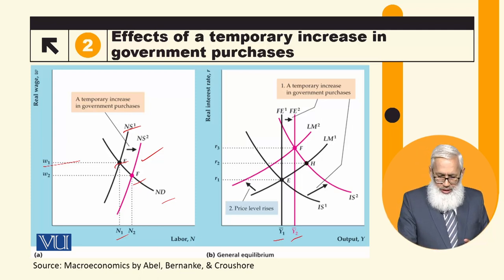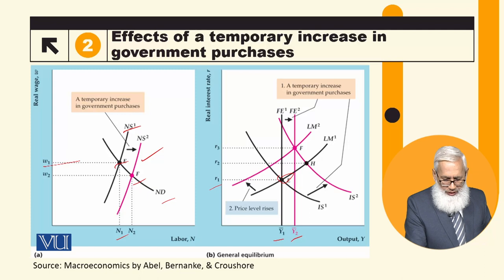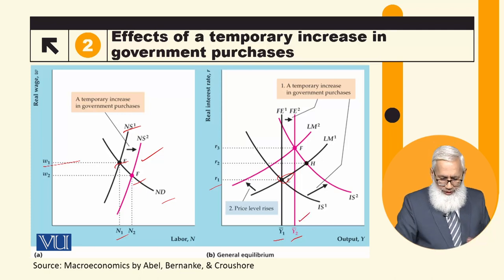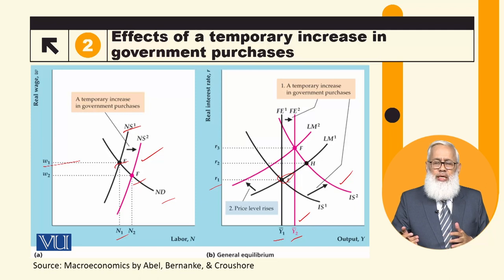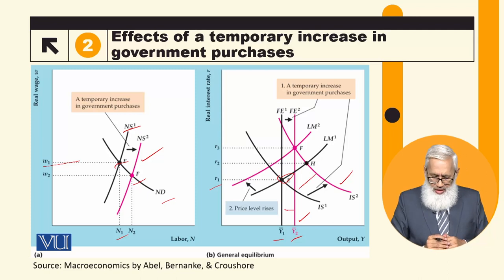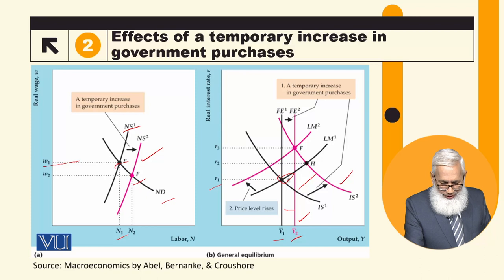Initially when output was y1, the equilibrium point e in the diagram represents IS1 curve, LM curve, and FE line all intersecting at one point — that is the general equilibrium — giving real interest rate r and output y. Now, with the increase in government spending, the FE line shifts rightward (becomes the red line), and the IS curve also shifts rightward due to increased aggregate demand. The shift of the IS curve is larger than the shift of the FE line. In the short run, the economy moves to point h, where IS2 and LM1 intersect.